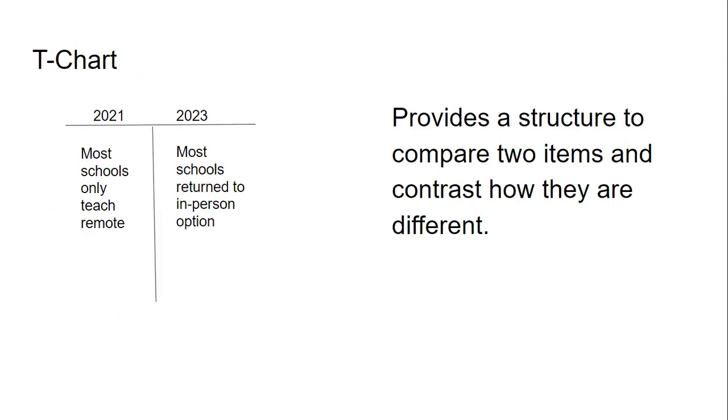A t-chart provides a structure to compare two items or events. It allows you to show how two things differ.